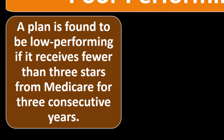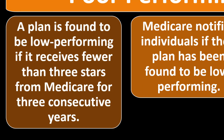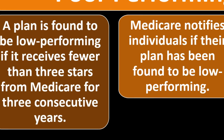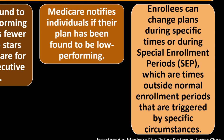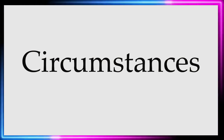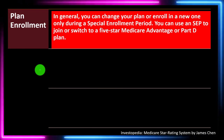Poor performance plans: a plan is found to be low performing if it receives fewer than three stars from Medicare for three consecutive years. Medicare notifies individuals if their plan has been found to be low performing. Enrollees can change plans during specific enrollment periods or special enrollment periods triggered by specific circumstances — so you need to determine when you can switch plans if you're not getting the stars you deserve.